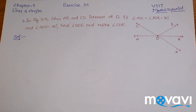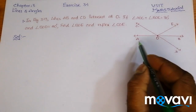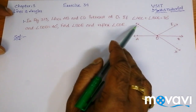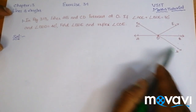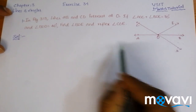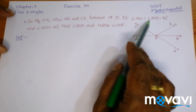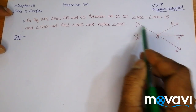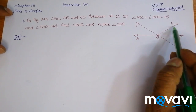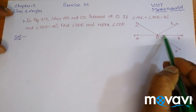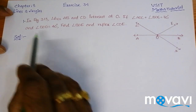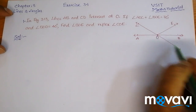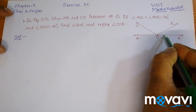The question is: in figure 3.13, that is this picture, lines AB and CD intersect at O. If angle AOC plus angle BOE is equal to 70 degrees — that is this angle plus this angle equals 70 degrees — and angle BOD is equal to 40 degrees, that is BOD this is 40 degrees.